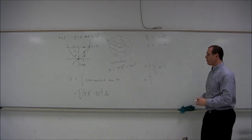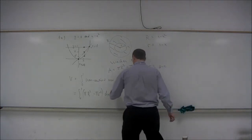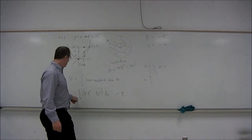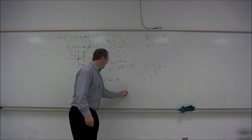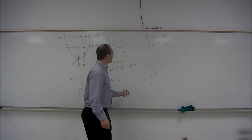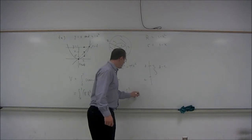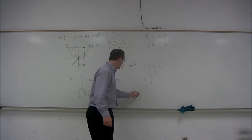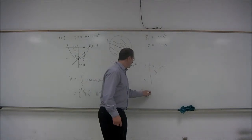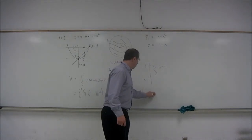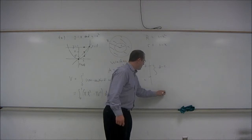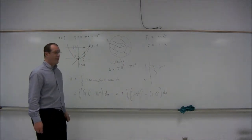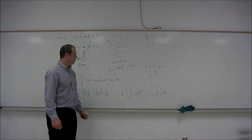We can now put those into our integral. The factor of pi can be brought to the front: pi times the integral from 0 to 1 of (1 minus x squared) quantity squared minus (1 minus x) quantity squared, dx. That's the quantity we need to integrate.